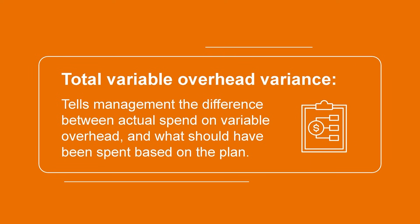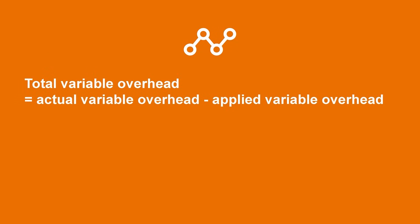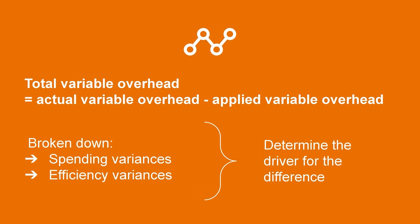The starting point for a variable overhead variance analysis will be to calculate the total variable overhead variance. This variance tells management the difference between what they actually spent on variable overhead and what they should have spent based on the plan. This is calculated with the formula: actual variable overhead minus applied variable overhead equals total variable overhead variance. Once this variance is calculated, it can be further broken down into spending and efficiency variances to determine the driver for the difference.